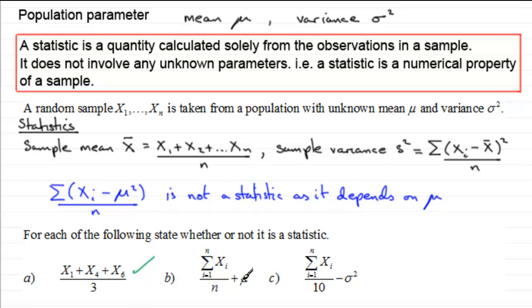Okay. This one, well, it's got μ in. So that's not a statistic. And this one, it's got the variance in σ². That's not a statistic. So these ones are not statistics. We'll just signify that then with a cross.